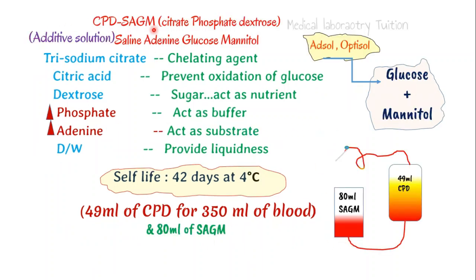Another option is CPD with SAGM. CPD is simply the anticoagulant, while SAGM is an additive solution containing saline, adenine, glucose, and mannitol. In simple words, SAGM provides extra nutrients to the RBCs so that they can live longer. Similarly, instead of SAGM we can also use Adsol or Optisol, which are also additive solutions containing glucose, mannitol, and extra nutrients such as adenine. Adding SAGM with CPD gives 42 days of blood storage at 4°C.